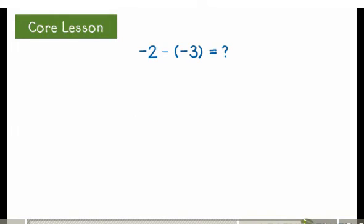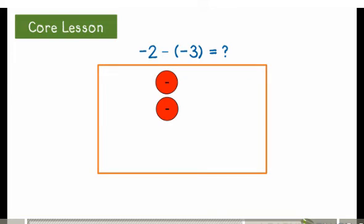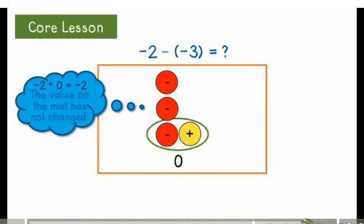Let's try another problem. Negative 2 minus negative 3. I have negative 2 on the mat. I want to subtract negative 3, but I don't have enough negatives to remove. I add a zero pair without changing the value on the mat.